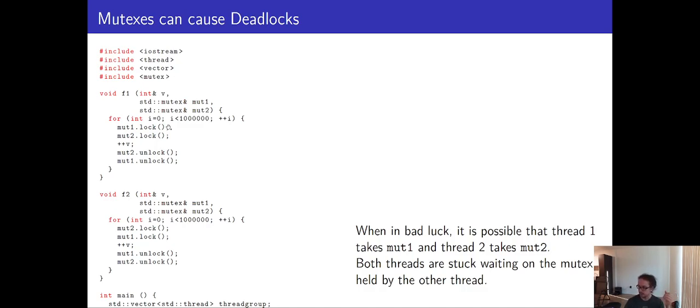You can consider that we've grabbed the lock is how we might refer to those. Then we'll grab lock two. Now we're holding two locks. We are holding two shared resources. We increment v. Then we release the lock on mutex two. Then we release the lock on mutex one. In function two, we do basically the same thing, but we grab the locks in reverse order, and we release them in reverse order.